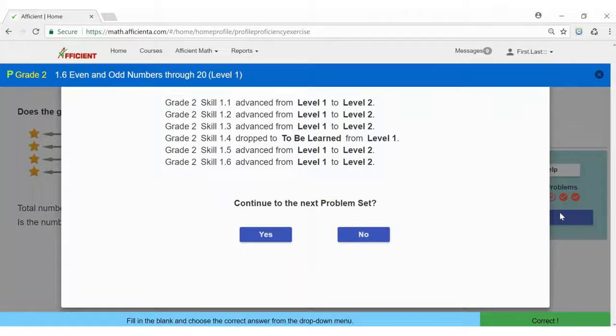At the end of each round, you'll see a progress summary. If you answer a skill correctly, it will move up to level two, but if you answer incorrectly, it will drop back down to be learned. So be sure to check your work before submitting an answer.